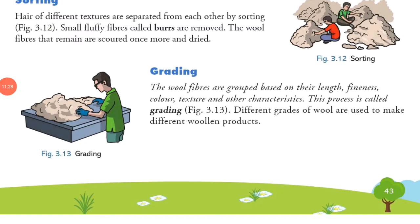Next step is grading. The wool fibers are grouped based on their length, fineness, color, texture and other characteristics. This process is called grading. Different grades of wool are used to make different woolen products.